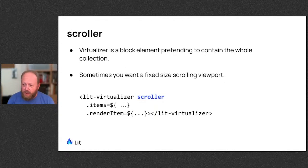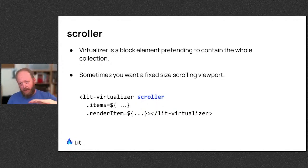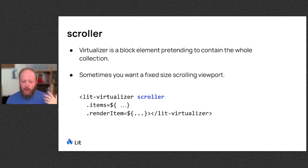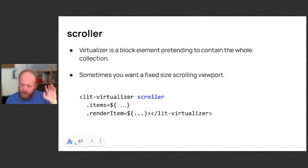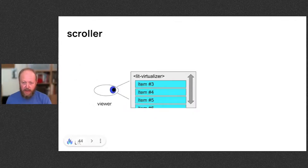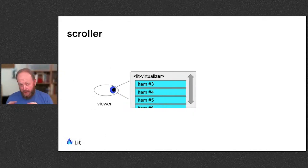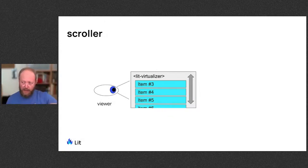Another feature is the scroller. By default, virtualizer is a big element that pretends to contain a whole collection inside another viewport. But if you give it the scroller attribute, lit-virtualizer itself becomes a little viewport — you style its width and height and scroll around to see the items in it. That can be really convenient if you're building a little browsable list.